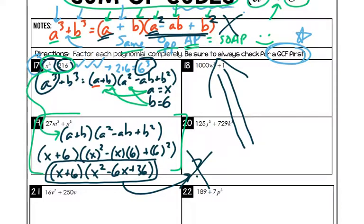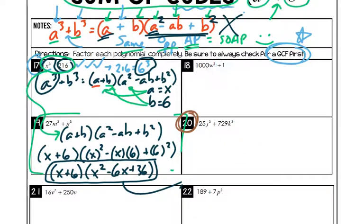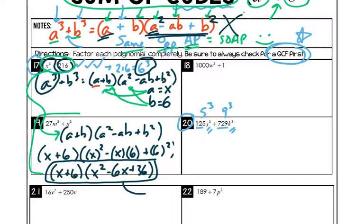How about number 20? Before looking for a's and b's, let's jump right to the GCF question first. Is there a GCF between 125j³ and 729k³? I believe 125 is 5³ and 729 is 9³. But 5³ and 9³ don't share a GCF, and j³ and k³ also don't have the same thing in common. So we'll jump right to checking: two terms? Yes. Added? Yes. Both cubed numbers? Yes — we can rewrite as (5j)³ + (9k)³.